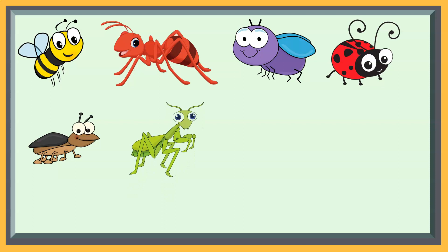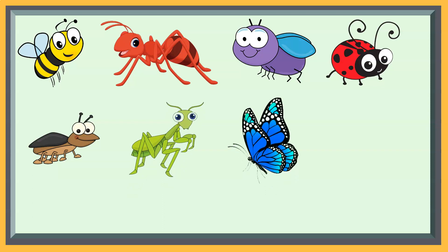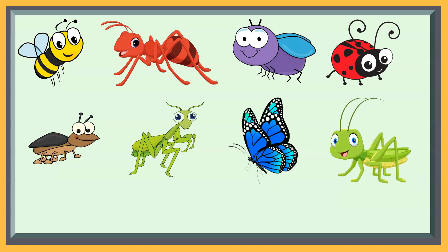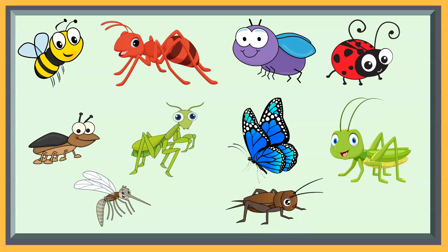A praying mantis is one type of insect. A butterfly is a type of insect. A grasshopper is a type of insect. A mosquito is a type of insect. A cricket is a type of insect. These are just some examples of insects.